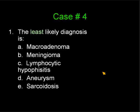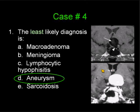The majority of you said aneurysm, and that is correct. If you paid attention, the vessels in the cavernous sinus and the suprasellar system were involved by the mass, and an aneurysm will be unlikely to do that. I have a couple of aneurysm cases here.